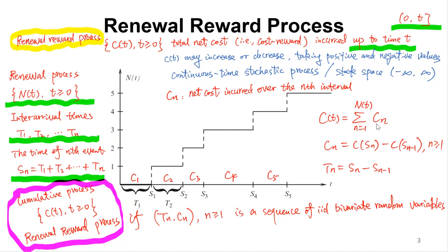By time t you have nt events, so you have nt time intervals. Adding all the costs together gives you ct. Formally, cn equals the total net cost up to time sn minus the total net cost up to time sn minus one. And tn, the nth inter-arrival time, equals sn minus sn minus one.